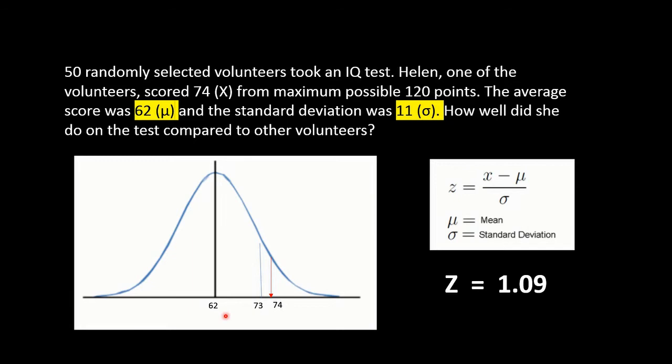So one standard deviation, 11 above 62, will be 73. And our lady, she gets a mark here, 74.